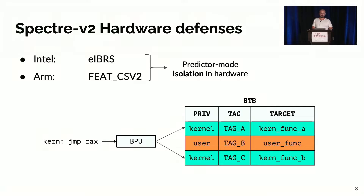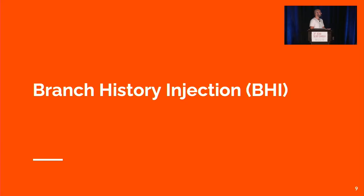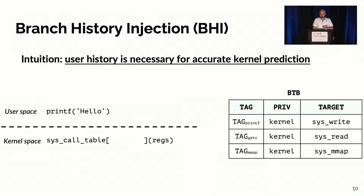So the question is: is this isolation complete? This is where we introduce our new primitive: Branch History Injection. To understand this primitive, we started from the intuition that user-space history is necessary for accurate kernel prediction, and we use the running example of a syscall to explain why.